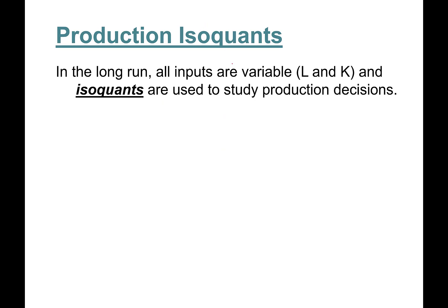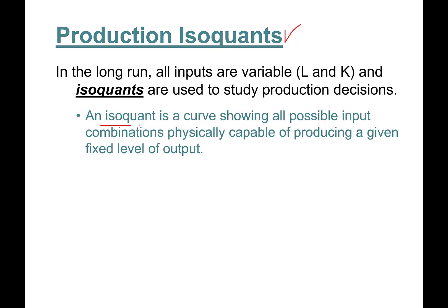This is part one — we will learn about isoquants. Production isoquants are our focus in part one. In the long run, all inputs are variable, so labor and capital can be adjusted, and isoquants are used to study production decisions. An isoquant is a curve showing all the possible input combinations — labor and capital combinations — physically capable of producing a given, fixed level of output.